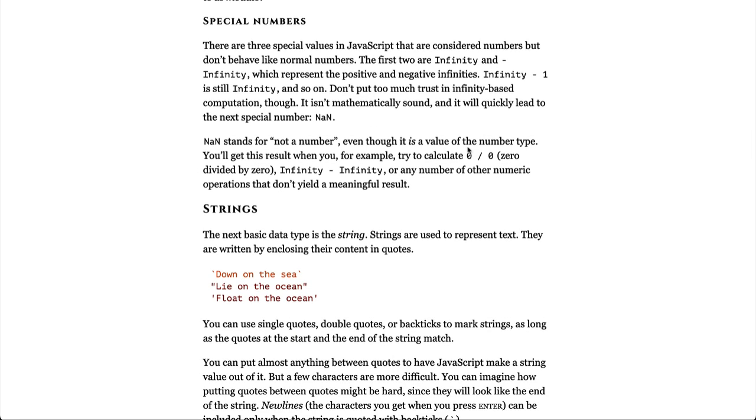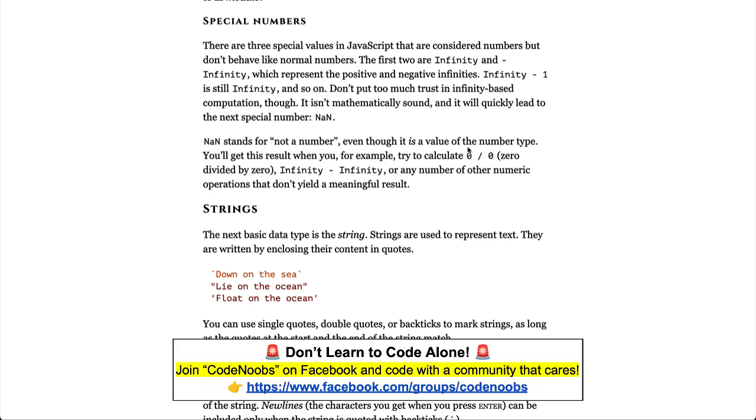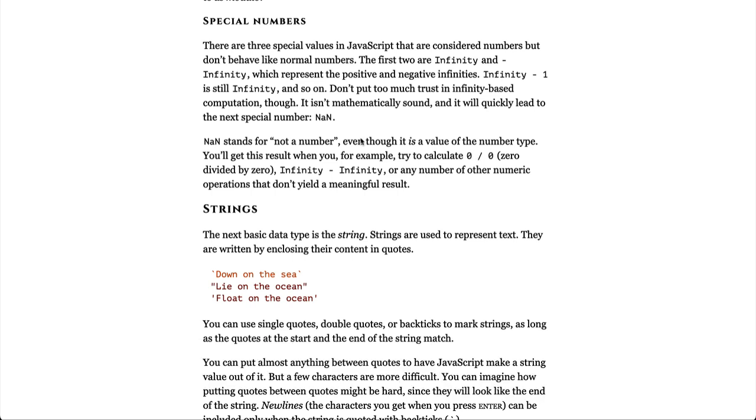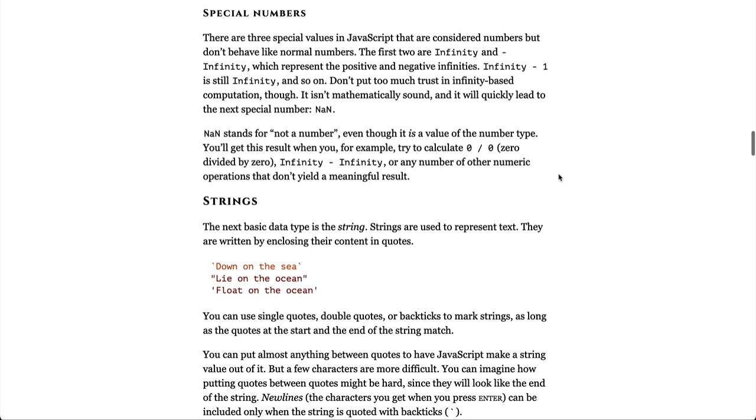Special numbers. There are three special values in JavaScript that are considered numbers but don't behave like normal numbers. The first two are infinity and negative infinity which represent the positive and negative infinities. Infinity minus 1 is still infinity and so on. Don't put too much trust in infinity-based computation though. It isn't mathematically sound and it will quickly lead to the next number, NaN. NaN stands for not a number even though it is a value of the number type. You'll get this as a result when, for example, you try and calculate zero divided by zero, infinity minus infinity, or any number of other numeric operations that don't yield a meaningful result.